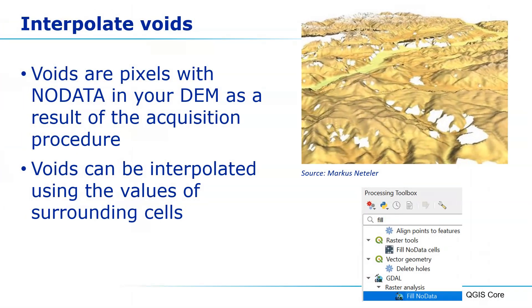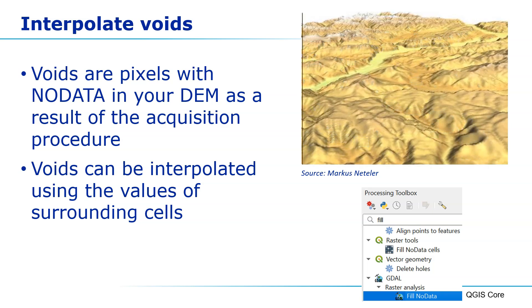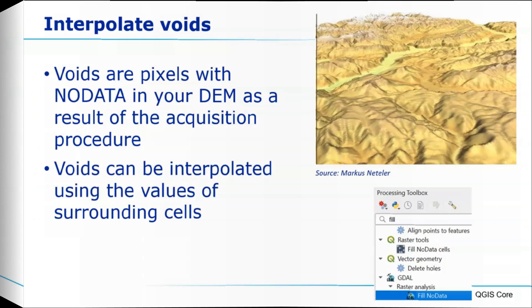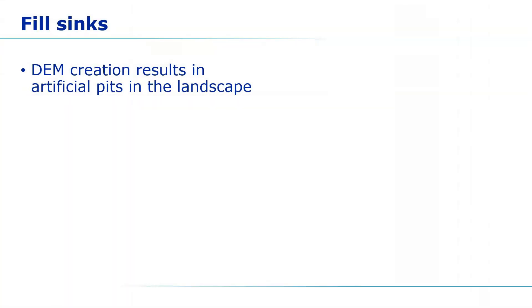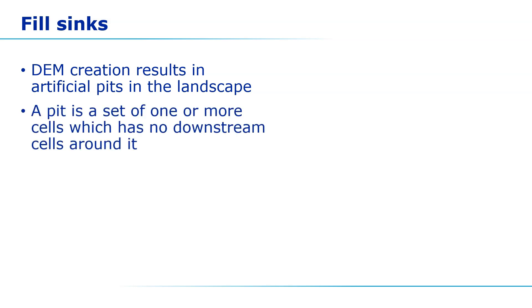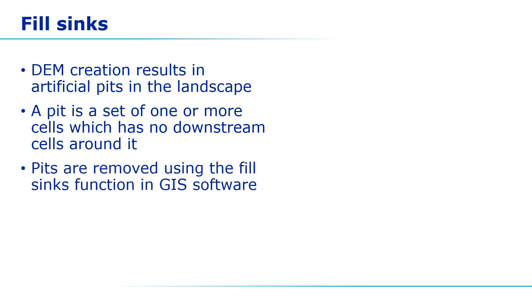Sometimes your DEM has voids — pixels with no data — which need to be interpolated first before we proceed with the rest of the procedure. We can use the core tool in QGIS from GDAL called Fill NoData. A very important step in hydrological analysis of digital elevation models is to fill the sinks. DEMs often have artificial pits in the landscape — these are sets of one or more cells which have no downstream cell around them. These pits need to be removed for correct flow of water to the outlet.